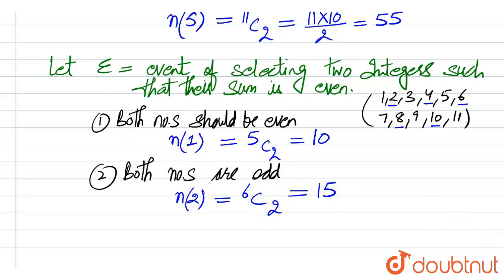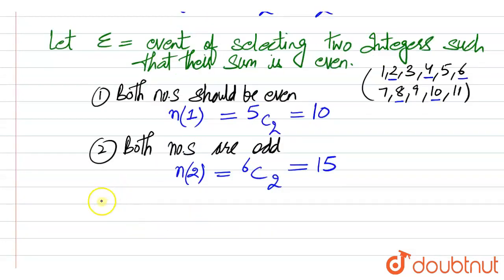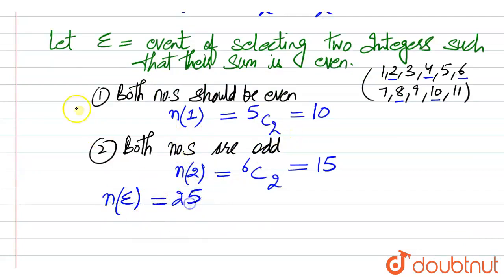The number of elements in event E is the sum of all these cases, so this is equal to 10 + 15 = 25.